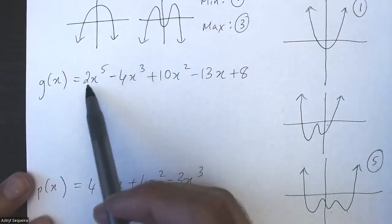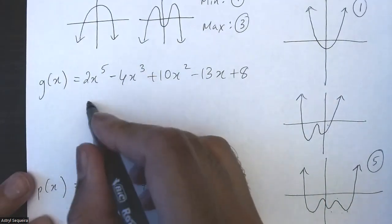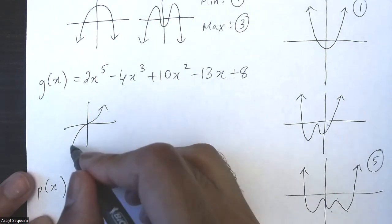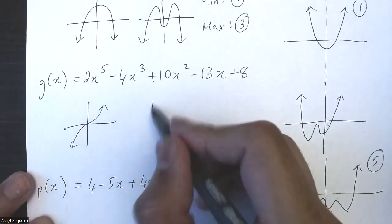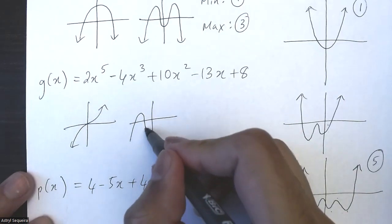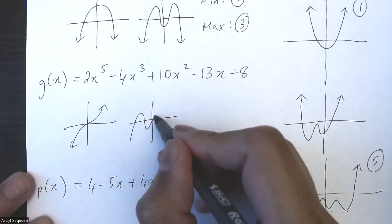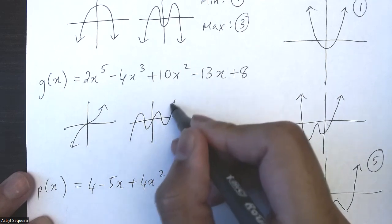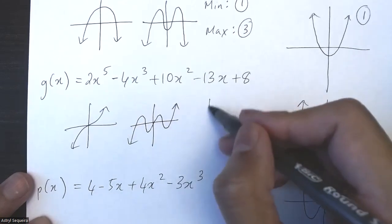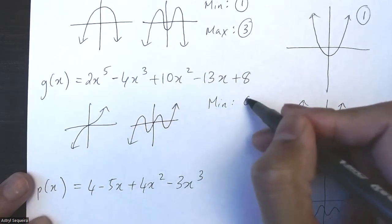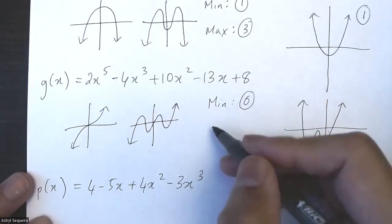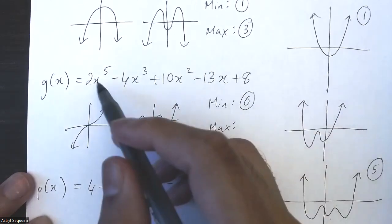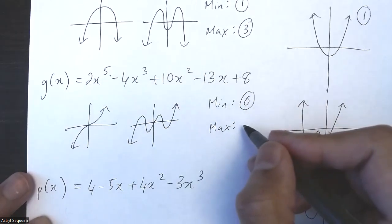Here I have a positive x^5 odd function. So the minimum number of turning points will be zero, and the maximum number of turning points will be four.